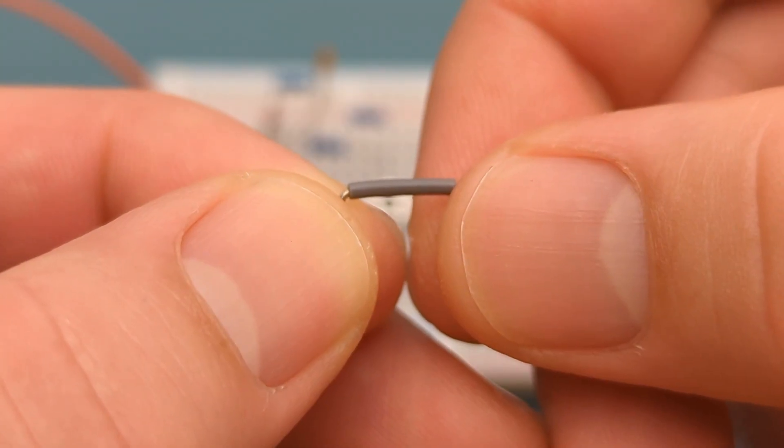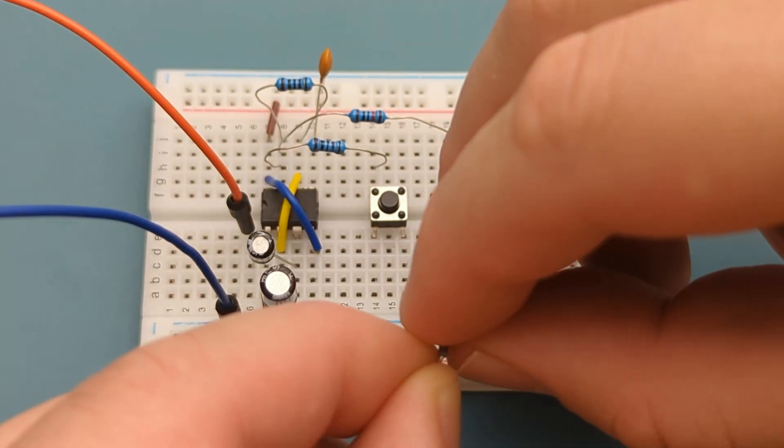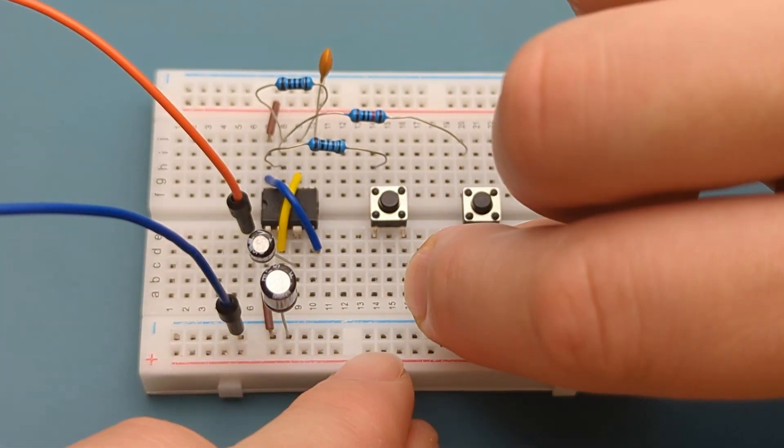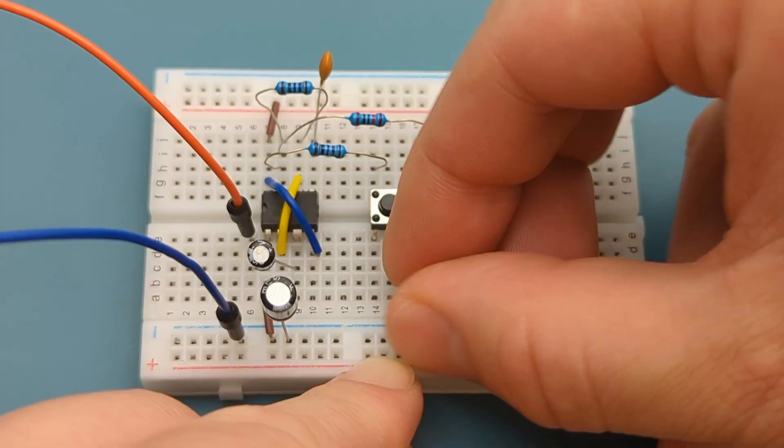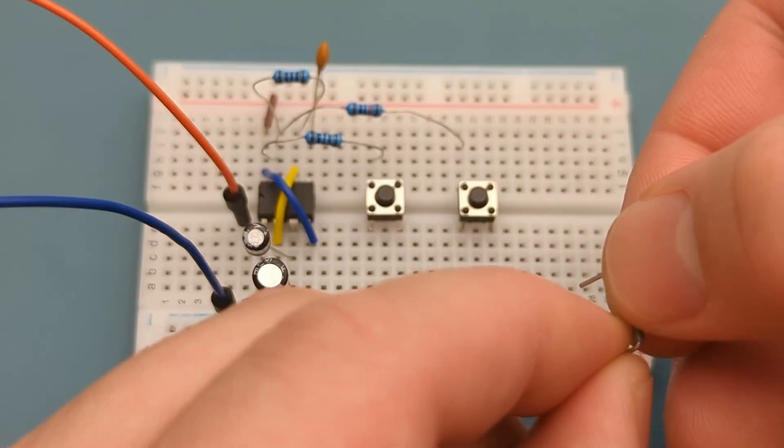Insert a jumper wire in the same row as one leg of the first switch and the positive rail. Insert a jumper wire in the same row as one leg of the second switch and the positive rail.